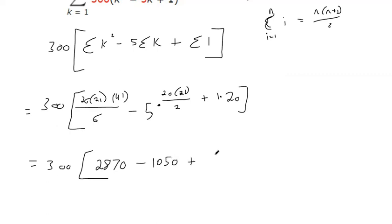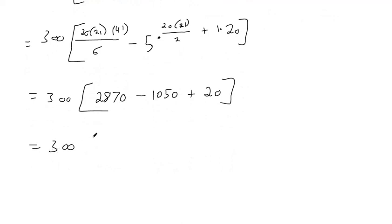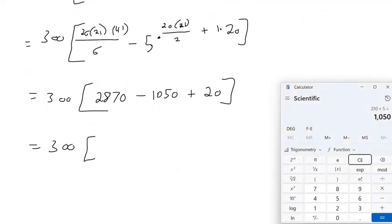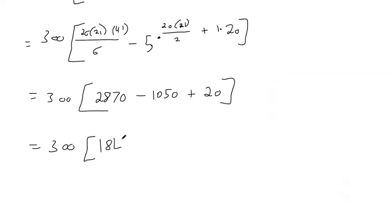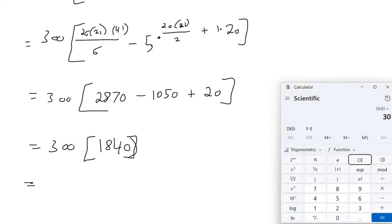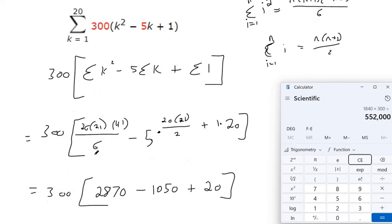And then 20 times 1 is 20. So 2,870 minus 1,050 plus 20 is 1,840, and then multiplying that by 300, we're done, 552,000.